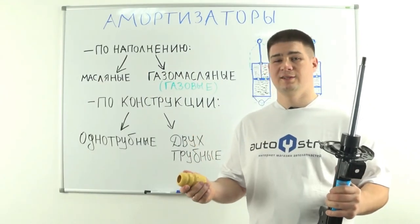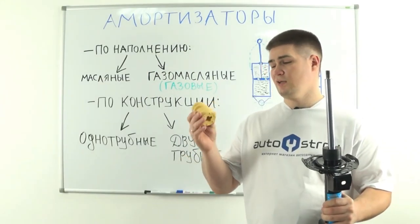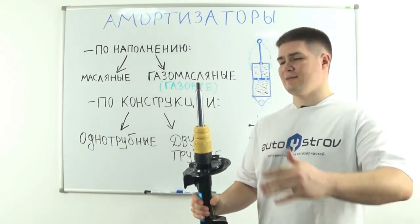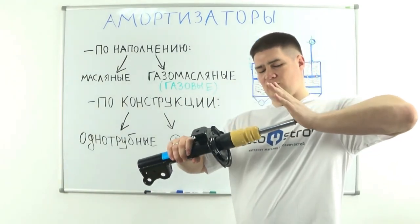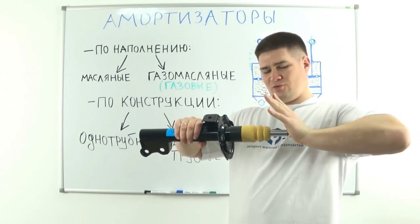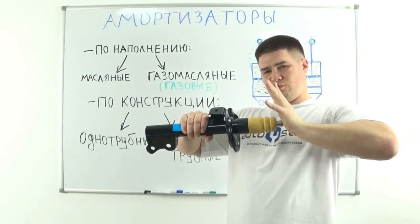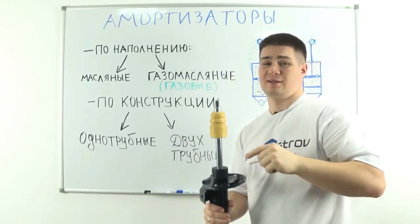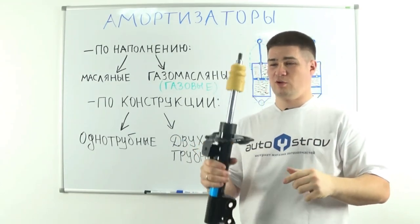And I almost forgot, there is also a very important part for the shock absorber. This is the shock absorber bump stop. It's needed in those cases when the shock absorber is compressed directly to the shock absorber support itself, like this. The shock absorber bump stop is needed to prevent rubbing between metal suspension components.